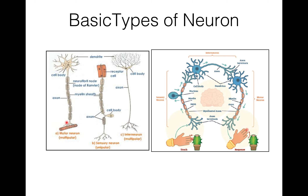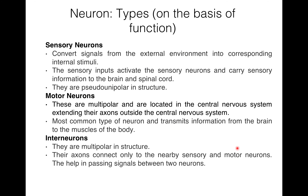The third type is the motor neuron. It has a short dendrite and long axon. Motor neurons conduct impulse to an effector — that is, a muscle or gland. The cell body and dendrites are located in the spinal cord, and the axon is outside the spinal cord. Motor neurons are multipolar and located in the central nervous system, extending their axon outside the central nervous system. They are the most common type of neuron.